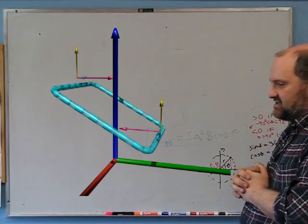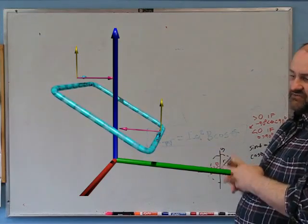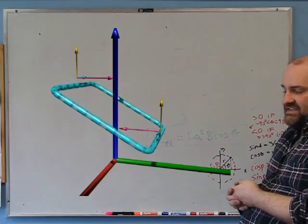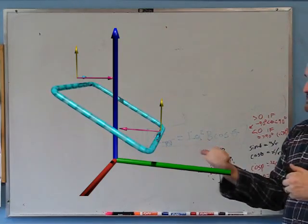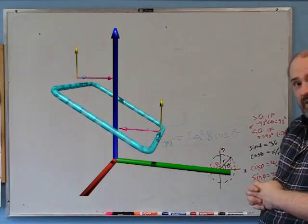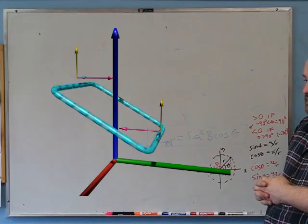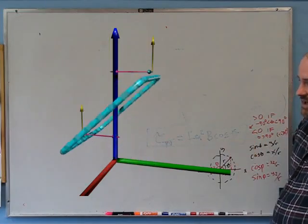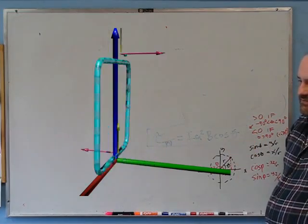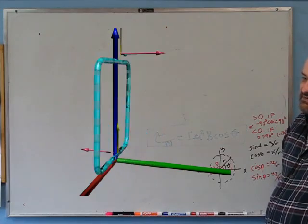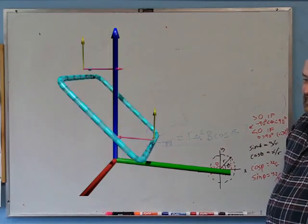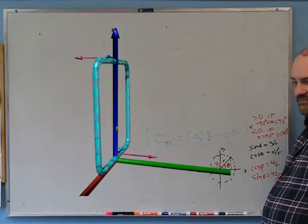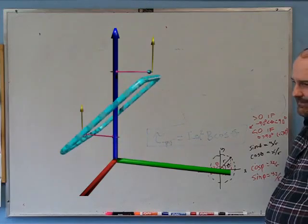Starting from a theta between 0° and 90°, there's a positive torque that starts the loop spinning. For the first half-turn it accelerates; once it passes through horizontal it decelerates, and with no friction the whole thing oscillates back and forth — never continuously spinning in one direction.